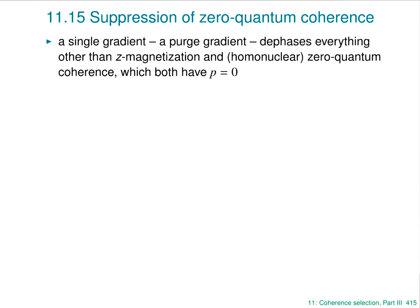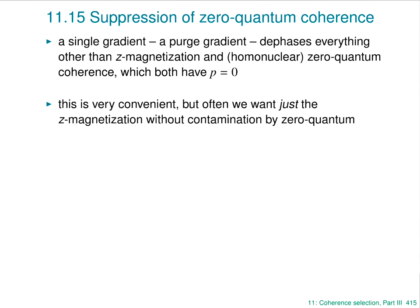If you want to select Z magnetization, you can use a purge gradient — just apply a gradient, everything else dephases and you're left with Z magnetization. This is very nice, but you need to remember that if you do this, you risk contamination with zero quantum, because the purge gradient gets rid of everything else except zero quantum. And sometimes we need to worry about that.